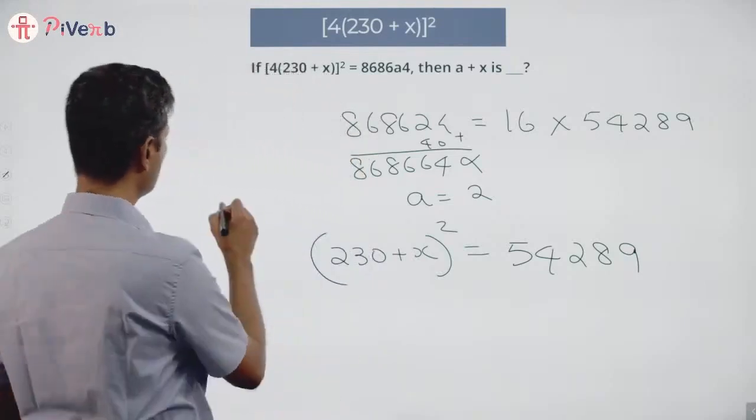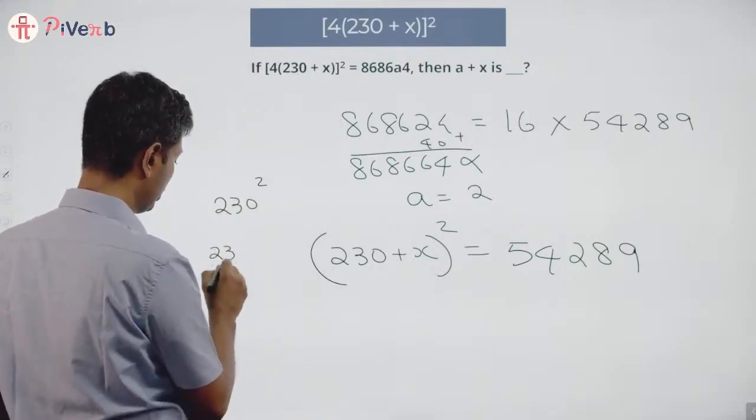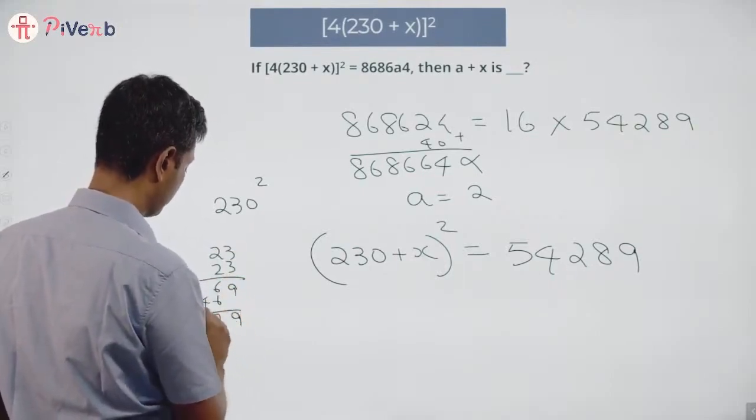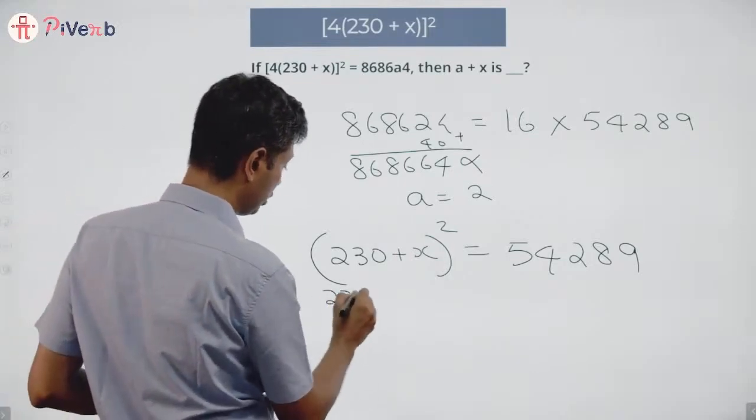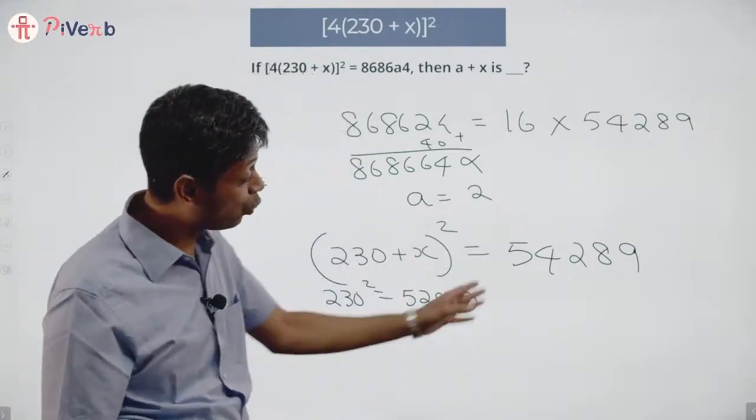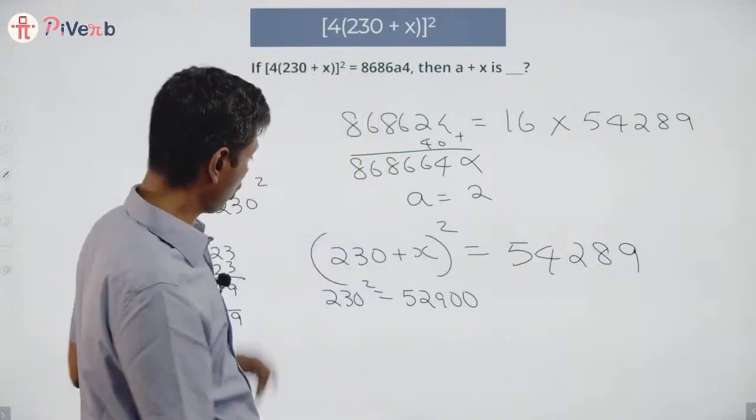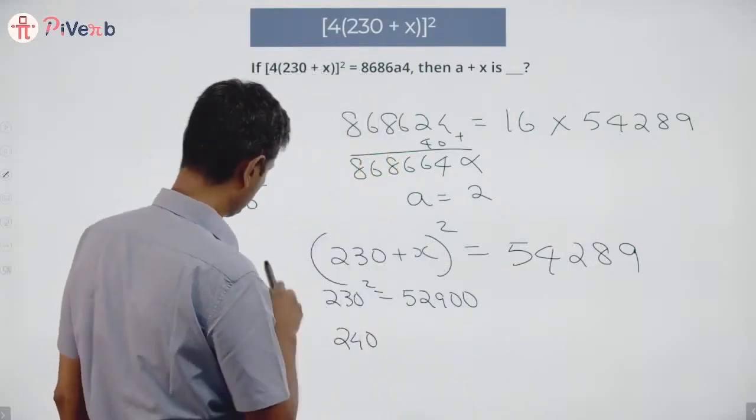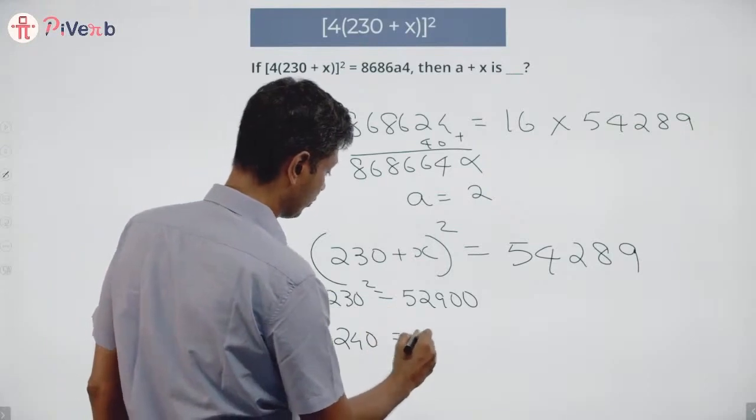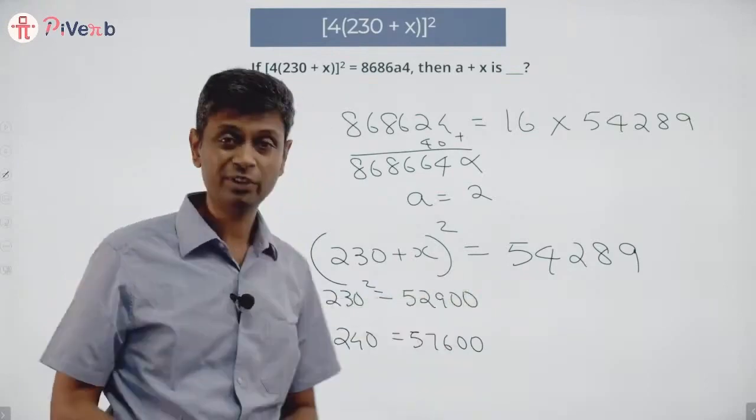Let me think about 230². 23 times 23 is 69, 46 is 529, so 230² is 52900. This is 54289, slightly bigger. 240² - 24 times 24 is 576, 240² is 57600. This number is in between these two, so they are looking at a number in the 230s. You square that we should get 54289, so it's an odd number.